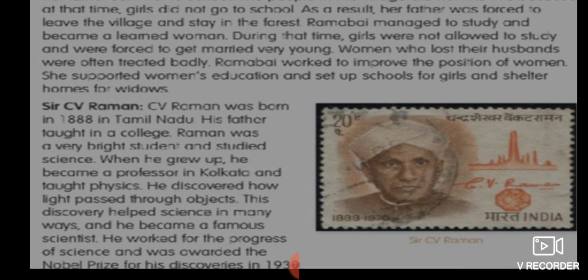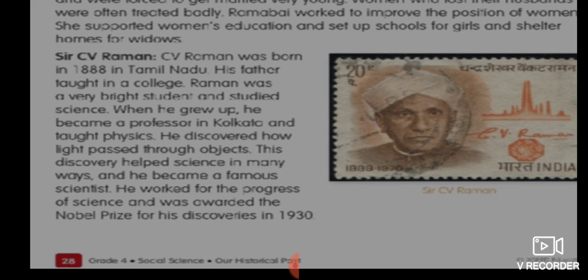Sir CV Raman was born in the year 1888 in Tamil Nadu. His father taught in a college. Raman was a very bright student and studied science. When he grew up, he became a professor in Calcutta and taught physics. He discovered how light passed through objects, and this discovery helped science in many ways, making him a famous scientist.